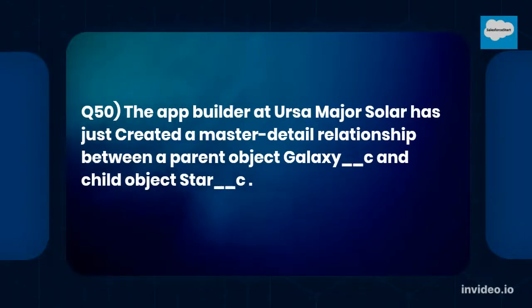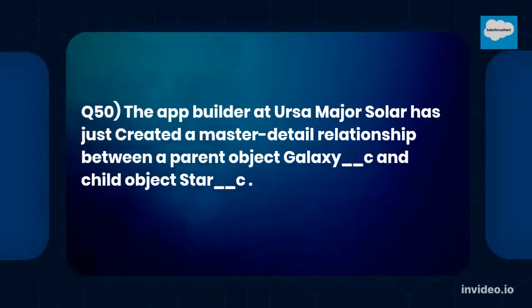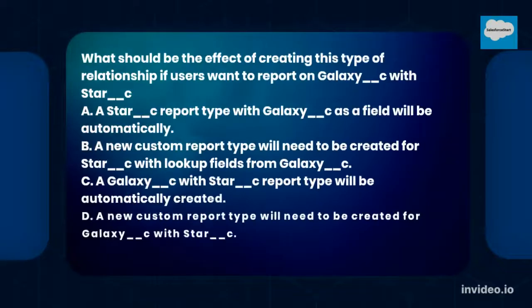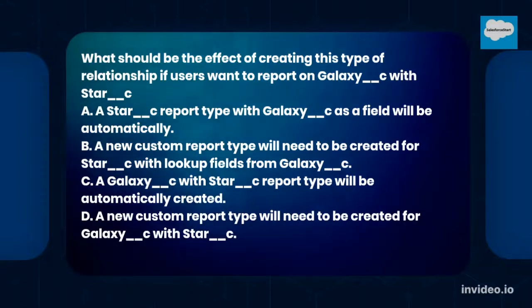Question number 50: The app builder at Ursa Major Solar has just created a master-detail relationship between a parent object 'galaxy__c' and child object 'star__c'. What should be the effect of creating this type of relationship if users want to report on galaxy with star?